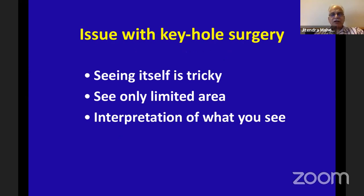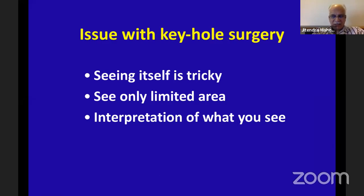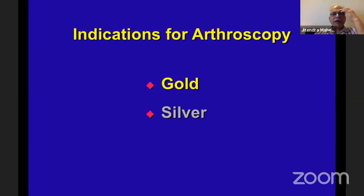More often than not, these are Grade 3 or Grade 4 osteoarthritis patients where someone does an MRI, finds a meniscus tear, and they jump for arthroscopy. The issue with keyhole surgery is that seeing itself is tricky. In open surgery you can open a little more, put a retractor, adjust your light. But when seeing through a keyhole, you see a limited area and must imagine the rest — for example, is it actually a meniscus tear or a blood clot giving that appearance?